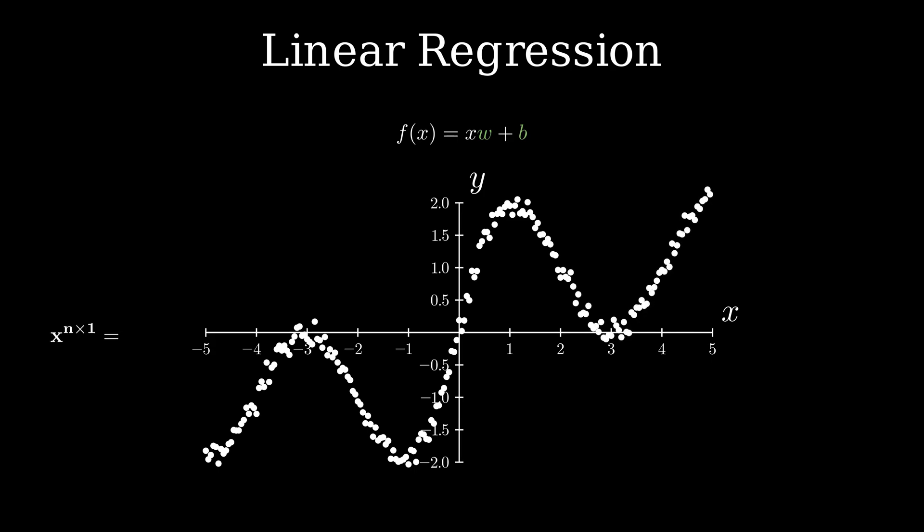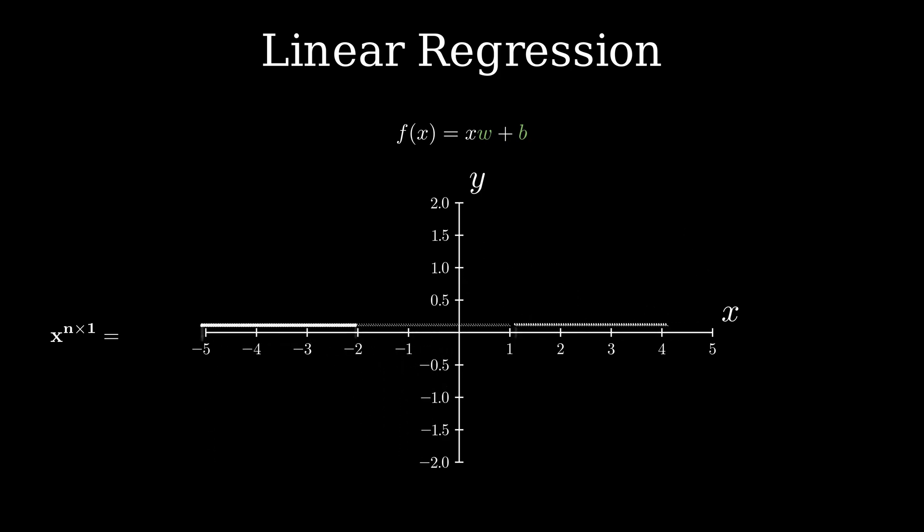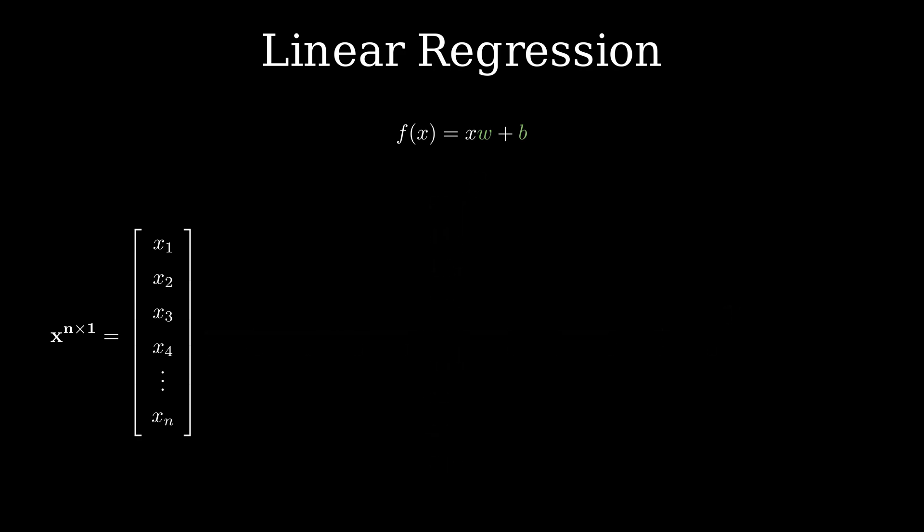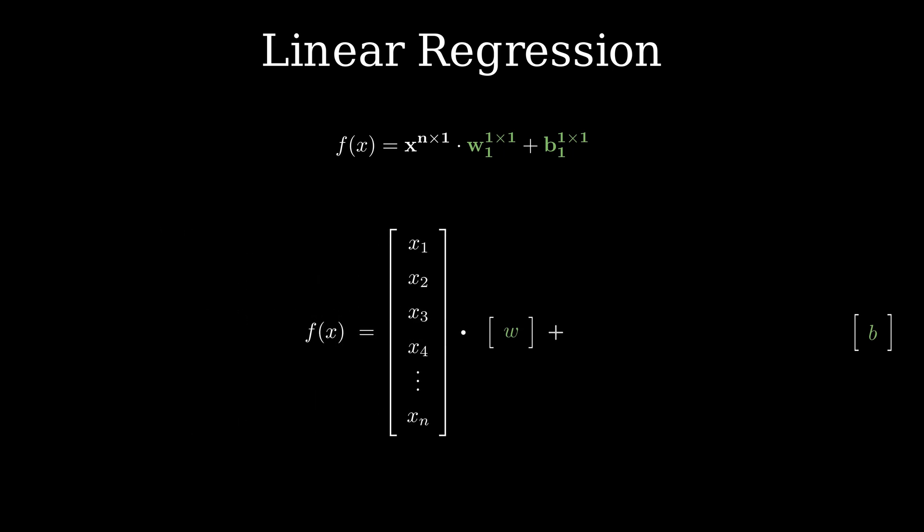Starting with the input vector x, it consists of all the x coordinates of the points in the dataset. Note that I'm using superscripts to indicate the dimensions of the matrices. Next, I'll define the parameter matrix W, which contains only one entry and the matrix b is constructed similarly. I can then rewrite the equation using these matrices and output function f(x) is also represented as a matrix with n entries.